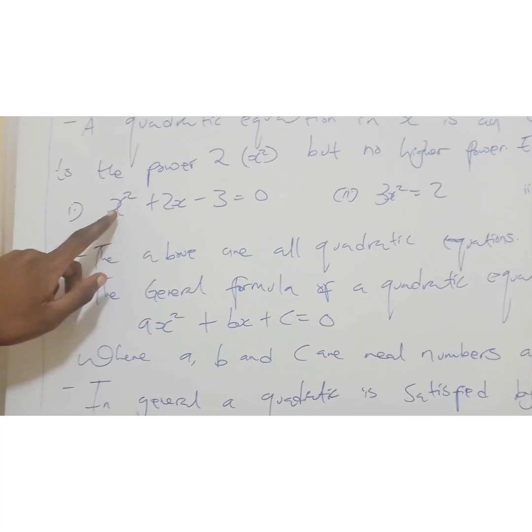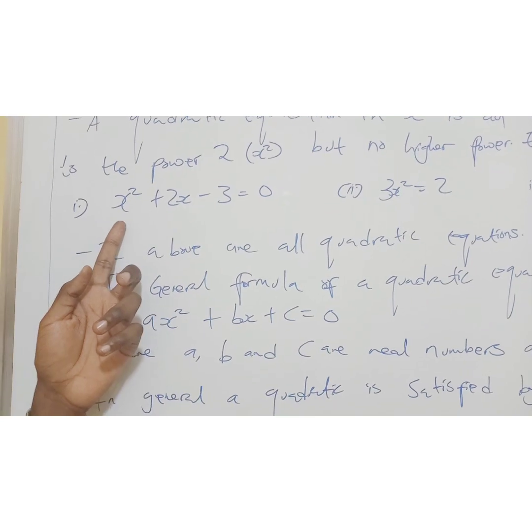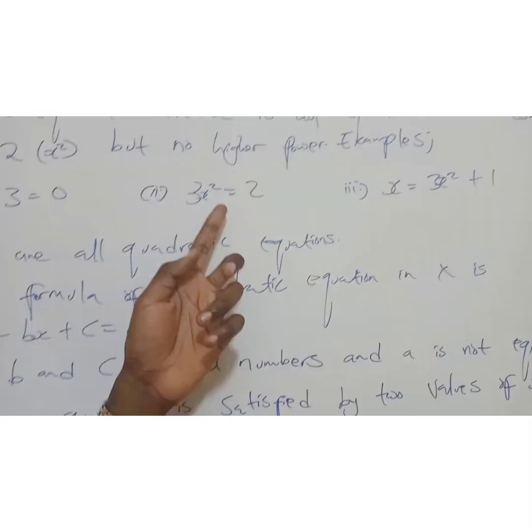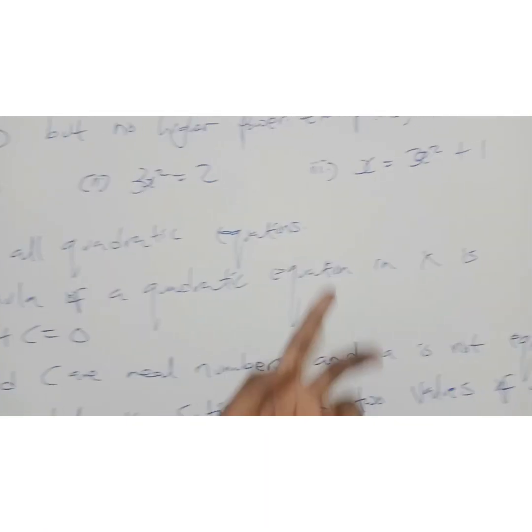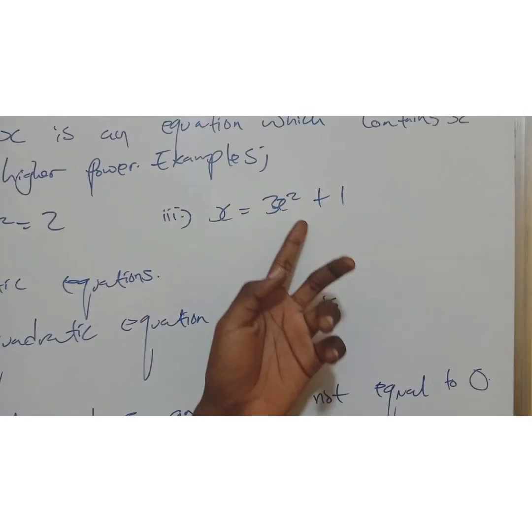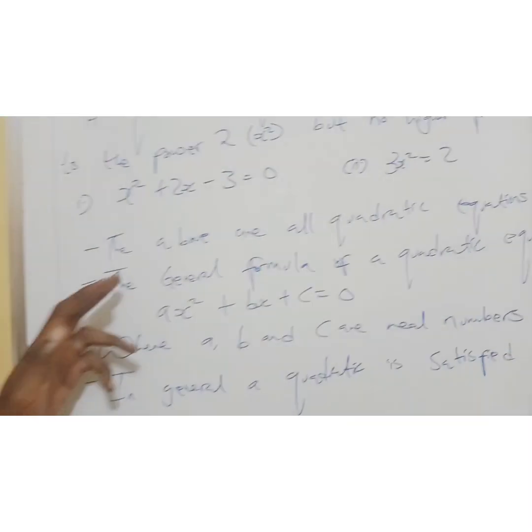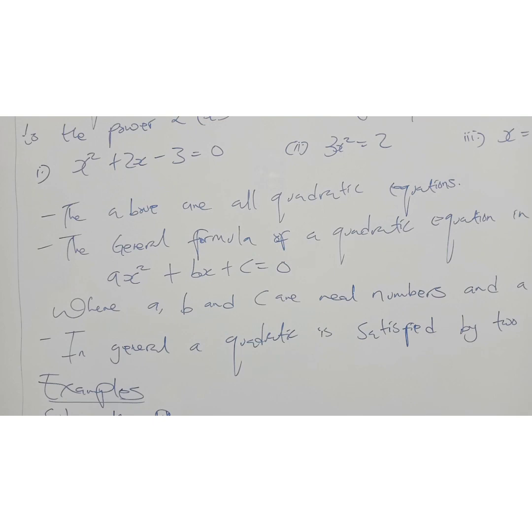So examples: we have x squared plus 2x minus 3. What makes this a quadratic equation is because of the x squared. We have 3x squared equals 2. Then we have x equals 3x squared plus 1. What makes this a quadratic equation? Because of the squared. So the above are all quadratic equations.